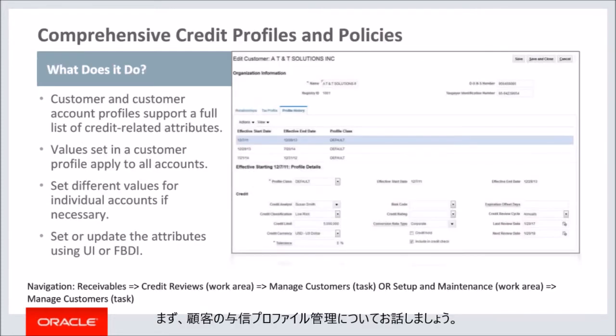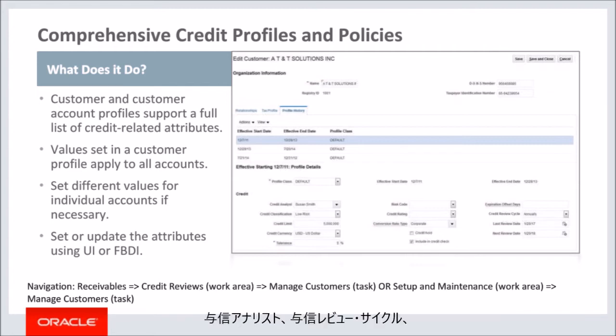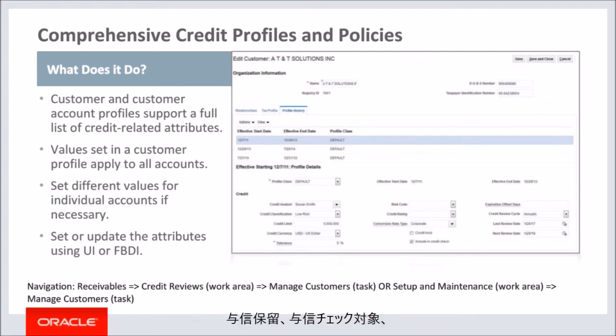Let's talk about the credit profile management for customers. Customer profiles and customer account profiles now support a full list of credit-related attributes: credit analyst, credit review cycle, last review date, next review date, credit classification, credit limit, credit currency, tolerance, risk code, credit rating, credit hold, include in credit check, conversion rate type, and expiration offset days.